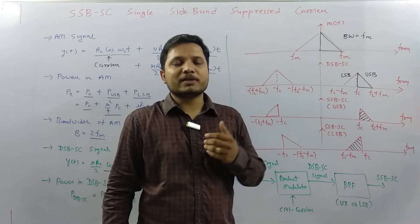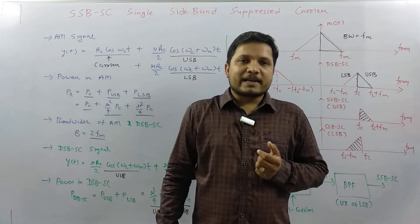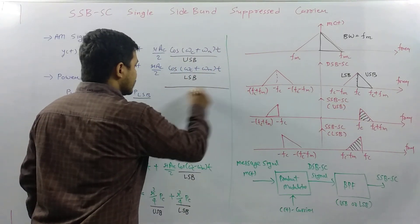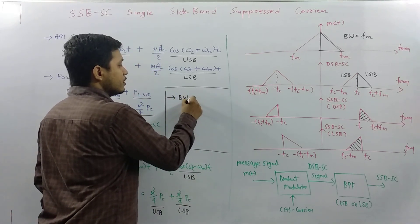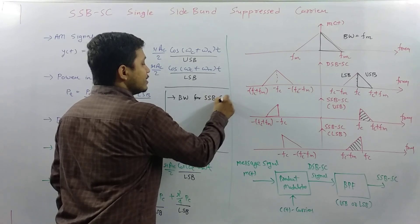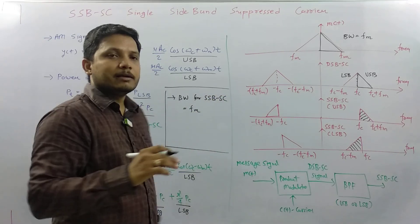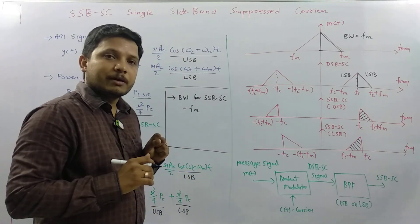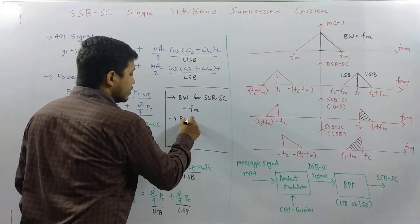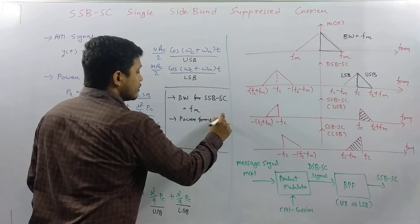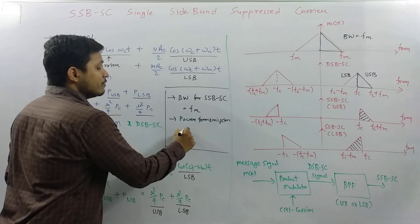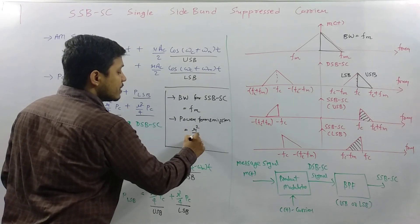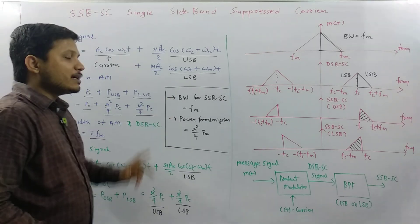Now let us see how many things we can save by using single sideband suppressed carrier. The bandwidth of SSB-SC is FM only, because we only send LSB or USB. Power transmission is also very reduced — either LSB power or USB power — which is mu-squared over 4 times PC. These are the major advantages of SSB-SC.